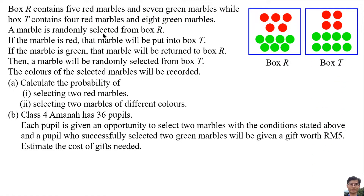A marble is randomly selected from Box R. If the marble is red, that marble will be put into Box T. If the marble is green, that marble will be returned to Box R. Then a marble will be randomly selected from Box T, and the colors of the selected marbles will be recorded.